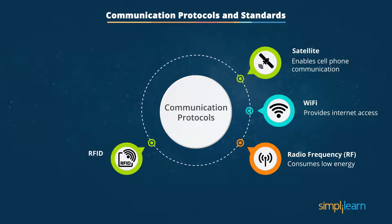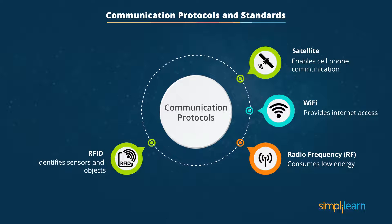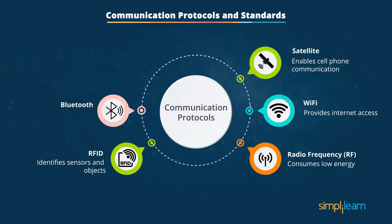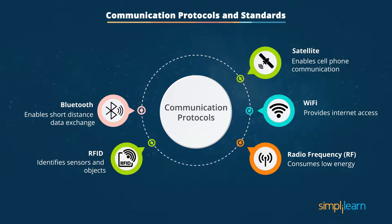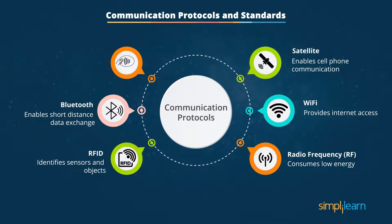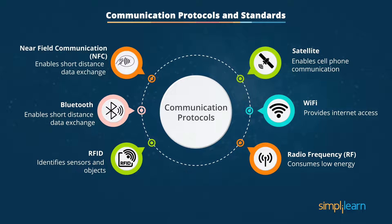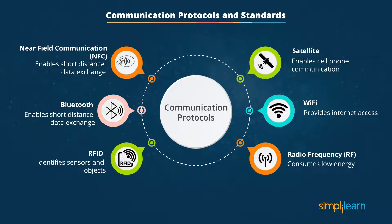The fourth protocol is RFID, which uses wireless electromagnetic fields to identify sensors and objects and does not require power. The fifth is Bluetooth, useful for short-term and short-distance data exchange and present in every smartphone with sensors. The final one is Near-Field Communication, or NFC, which uses electromagnetic induction and loop antennas, comes with encryption, has low-speed communication, and is used for short-range data exchange.